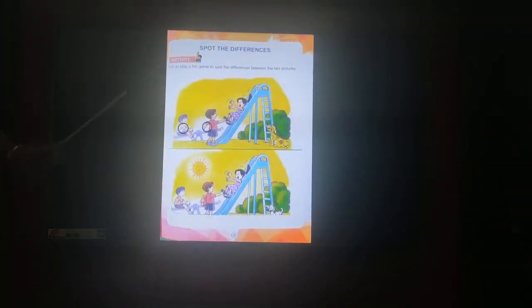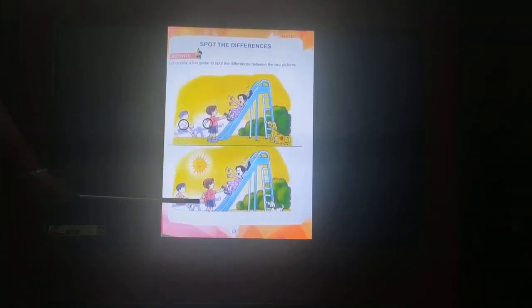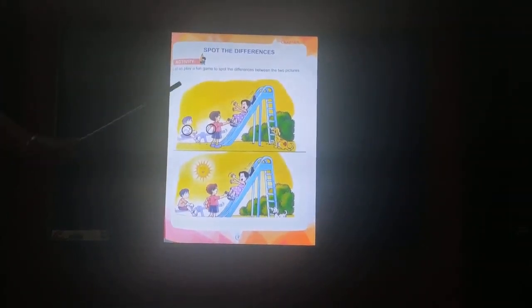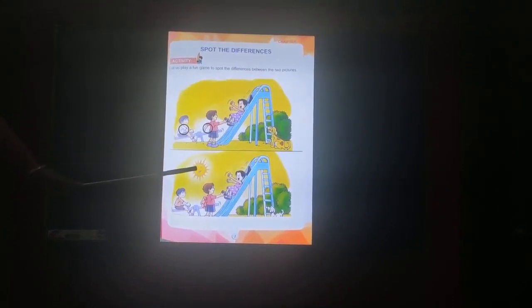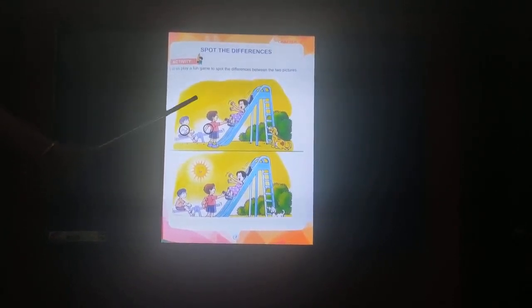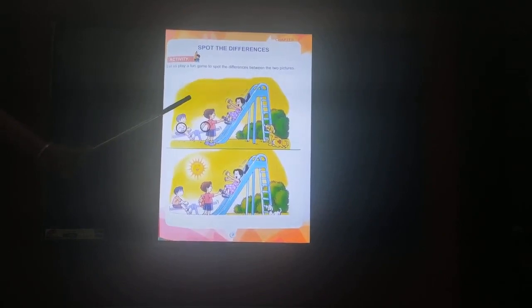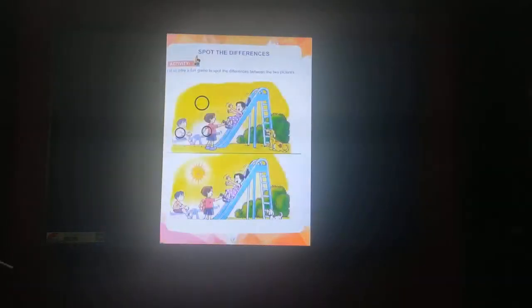Now again search, children. You can see the third difference. Oh yes, you are right — the sun. The bright sun. See, it's missing here. So we are going to circle it. Three differences we have spotted.